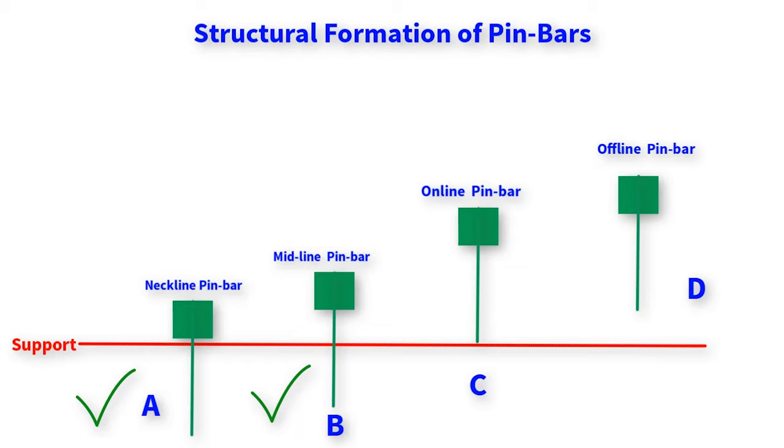Pin bar A shows us how powerful and effective the bulls were when price was testing the key level support. The bulls did all they could to ensure the boundary line was not broken.